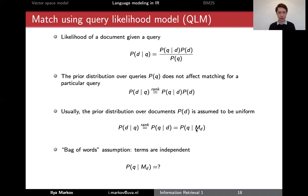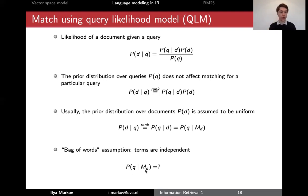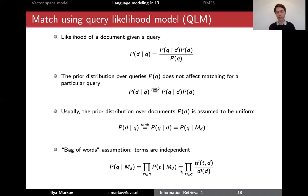Let's compute this probability. Assuming again the unigram language model where terms are independent, and we have a query 'University of Amsterdam' with three independent words — the probability of such a query given a document language model is just the product of the probabilities of all the words in the query.